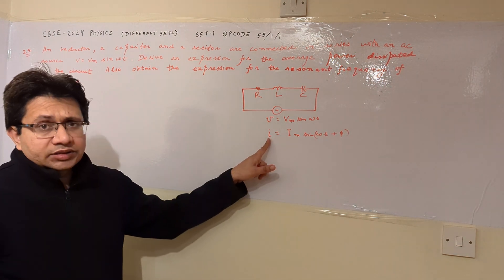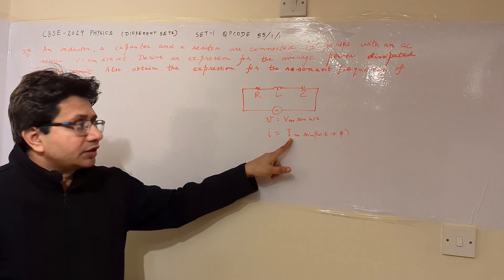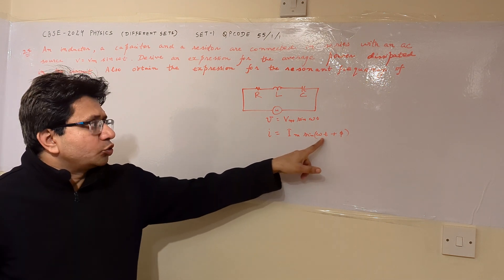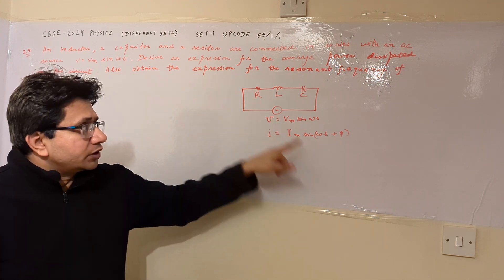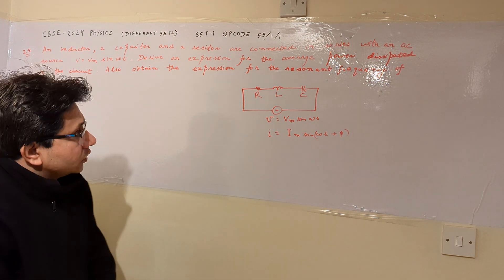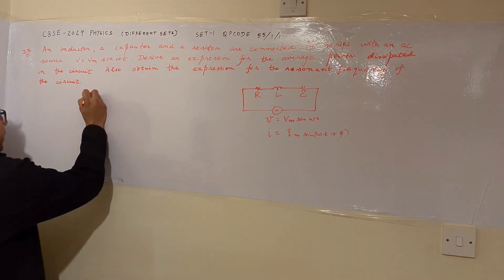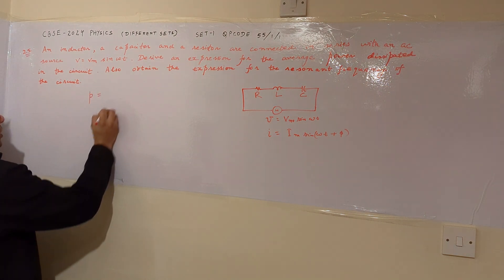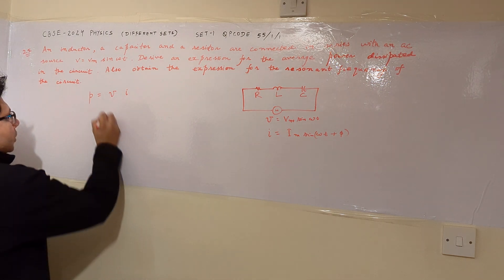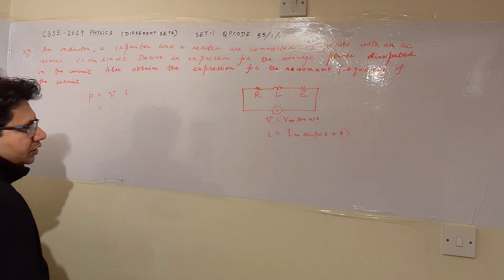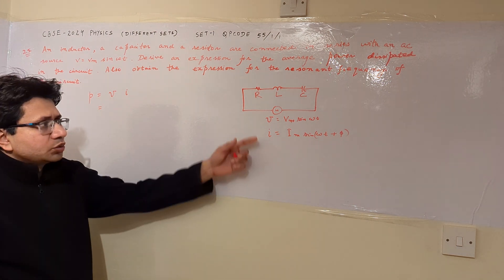Here I is the instantaneous value of current, Im is the peak or maximum value of current, and φ is the phase difference between voltage and current. From these two expressions we can calculate the power dissipated. Power is P equals V into I.